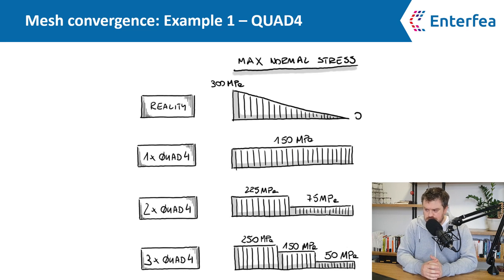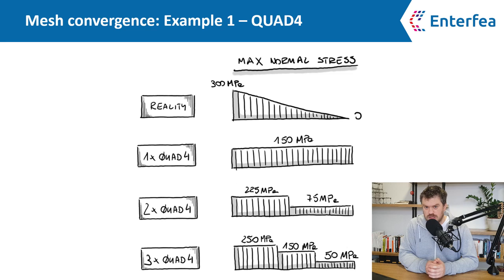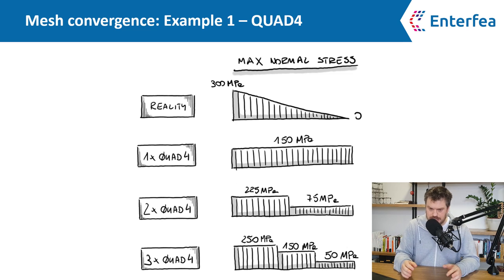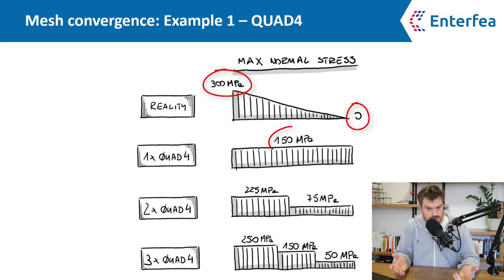Let's think about why that is. This is how the stress distribution looks, and what the quad four element does is it assumes that stress is uniformly distributed throughout the surface of the element. In a simple case, it takes the average of the stress on the left side and on the right side. In reality, on the right we have zero — because it's a cantilever — and on the left we have 300, so the average is 150 megapascals.